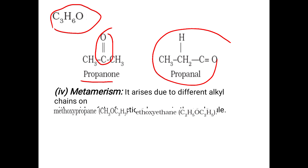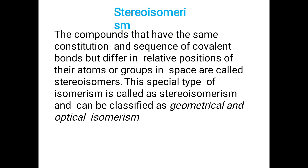Next is metamerism. It arises due to different alkyl chains on the compound — the alkyl chains vary in the compound. Such isomerism is known as metamerism.